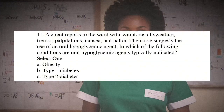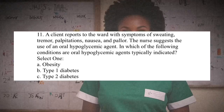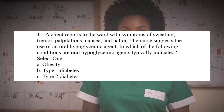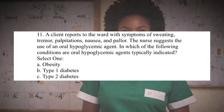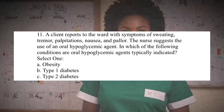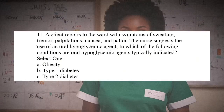Question 11: A client reports to the ward with symptoms of sweating, tremor, palpitations, nausea, and pallor. The nurse suggests the use of an oral hypoglycemic agent. In which of the following conditions are oral hypoglycemic agents typically indicated? A. Obesity. B. Type 1 diabetes. C. Type 2 diabetes. The answer is C. Oral hypoglycemic agents are used to lower blood glucose levels and are indicated for managing type 2 diabetes, which is characterized by insulin resistance and relative insulin deficiency. Type 1 diabetes requires insulin therapy rather than oral hypoglycemic agents. Obesity alone without diabetes does not warrant the use of oral hypoglycemic agents.